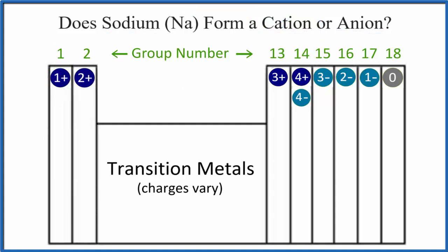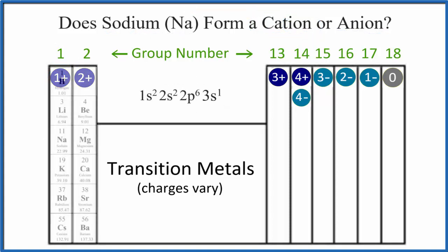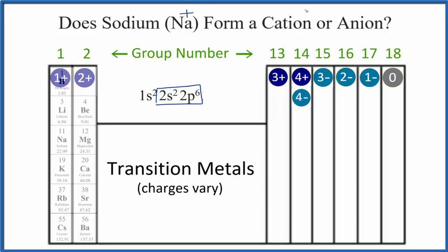Another way to think about this is to look at the electron configuration for sodium. Neutral sodium has 11 protons and 11 electrons. When we write the configuration out, we see the highest energy level — that third energy level — only has one valence electron. So we can lose that; we can give that away to another atom. We're left with the second energy level, full — so that's very stable. When sodium loses that one electron, that makes it positive, a one plus, and it's a cation.